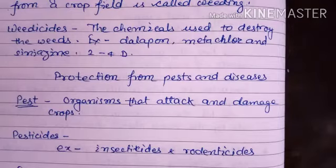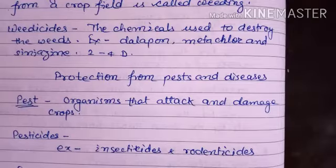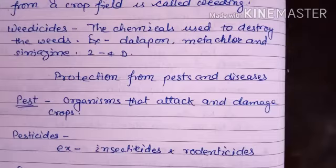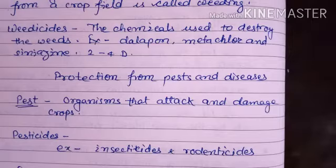Rust and smut are fungal diseases of wheat. Blight of potato is also a fungal disease. Wilt is a disease caused by bacteria, in which the xylem tissue of the plant gets blocked and the plant wilts and dies as water cannot be conducted up.